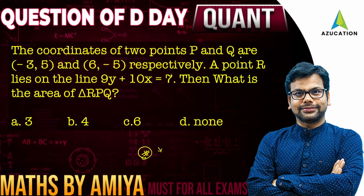The coordinates of two points P and Q are given. A third point R lies on the line 9Y + 10X + 7 = 0. Then what is the area of triangle R, P, Q? Which option is correct among the given choices? You must have read the question — try to solve it.